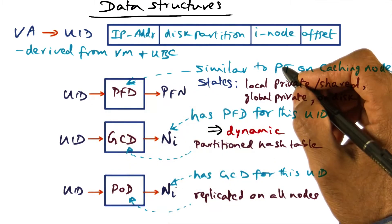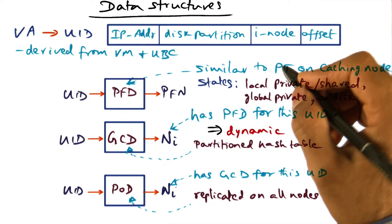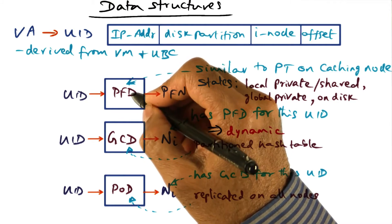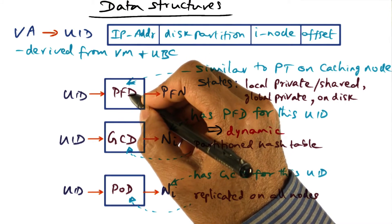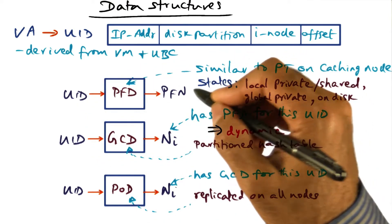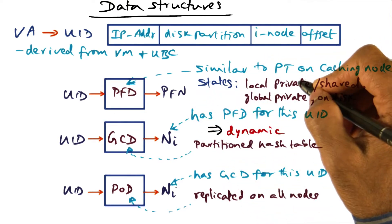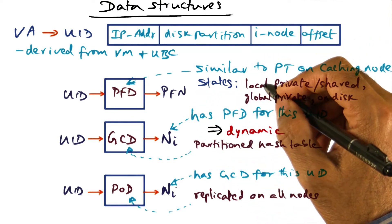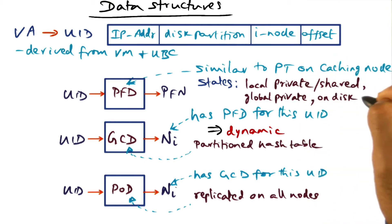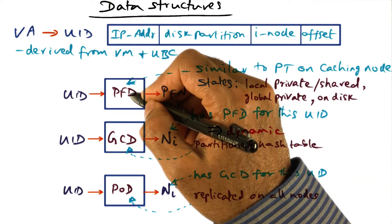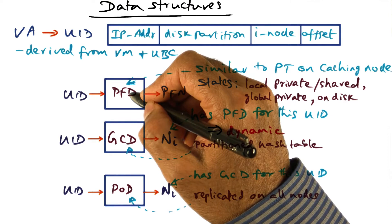Now, given a UID, I know that some PFD in the entire cluster has the mapping for the UID, saying what is the physical frame number that corresponds to it, if it happens to be on that node, or it's on the disk. That information is contained in some PFD in the entire cluster.